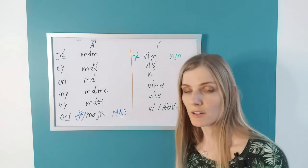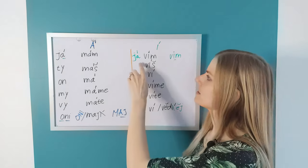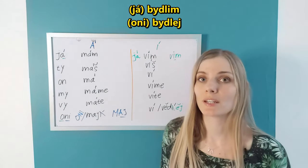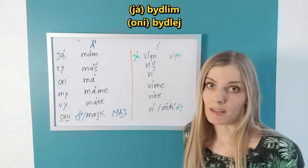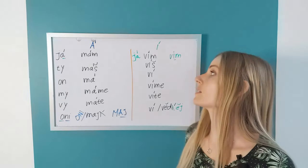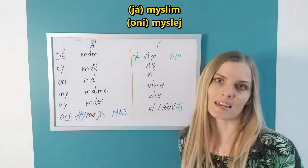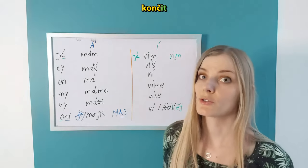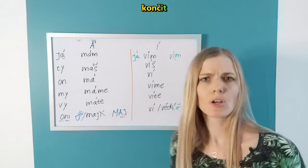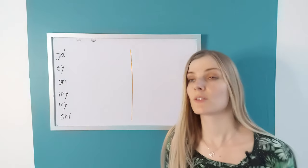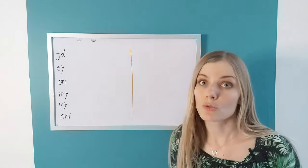Let's try with a couple of verbs. Bydlet, like I said. Instead of já bydlím, you might hear bydlim. Já bydlim. Oni bydlej. With myslet to think, you could hear já myslím a oni myslej. Oni myslej. Končit to end. Já končím, končím a oni končej.